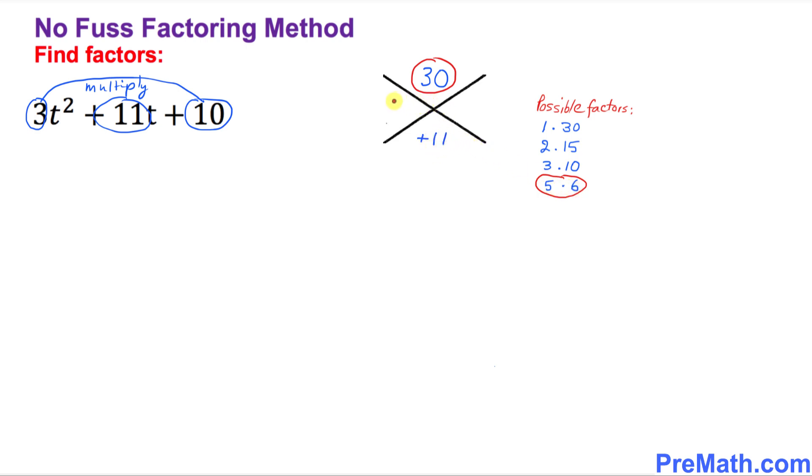So I want you to just write down 5 right up here and 6 right up here. Now we need to fix the sign. Since this is a positive 11, that means this is going to become positive 5 and positive 6. Once again, positive 5 and positive 6, these two factors, if you multiply them that's going to give you positive 30, and if you add them that's going to give you positive 11.